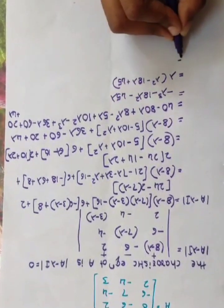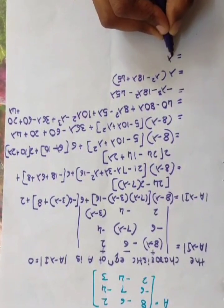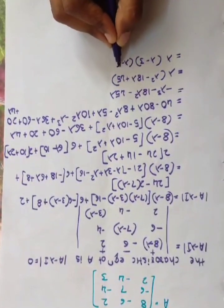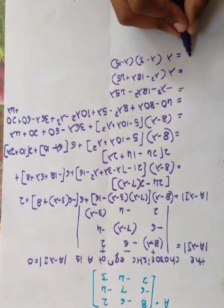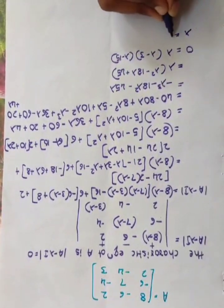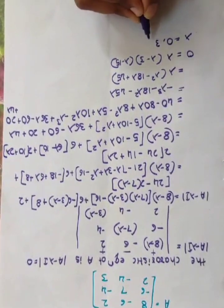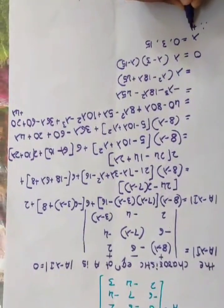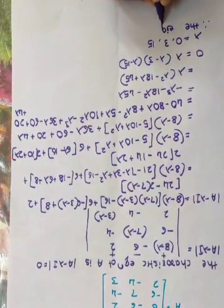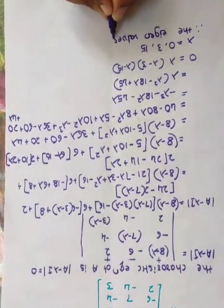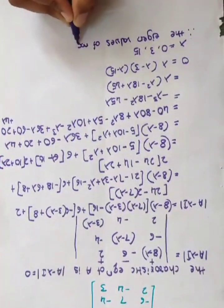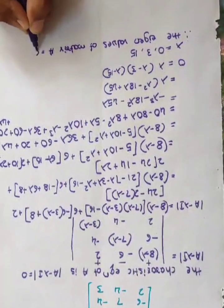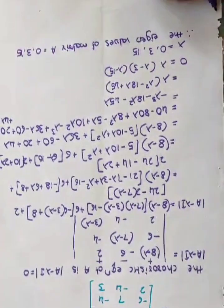By factorization method, taking lambda common outside, we get lambda times (lambda squared minus 18 lambda plus 45). Factoring further: lambda times (lambda minus 3) times (lambda minus 15) equals 0. Therefore the eigenvalues of matrix A are lambda equals 0, 3, and 15.